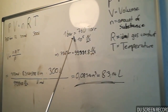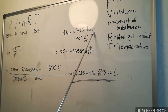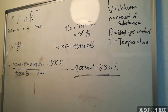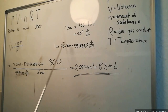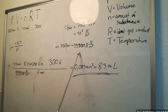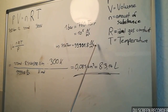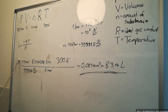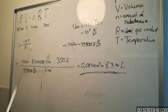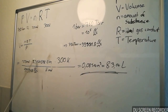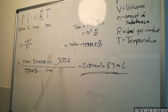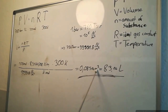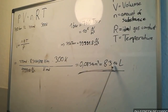We know 1 bar is equal to 760 Torr or 10 to the 5th newton per square meter. So, 750 Torr is equal to 99,991.8 newton per square meter. If we put all our terms into the formula and multiply this out, mol and mol cancel, newton and newton cancel. At the end we have 0.08314 cubic meter or 83.14 liters.